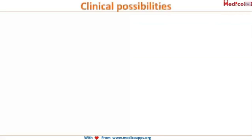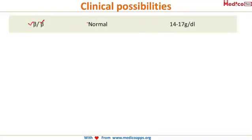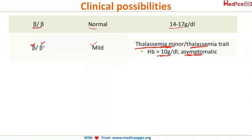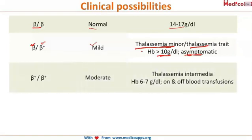Now let us discuss the clinical possibilities when there is abnormal beta chain formation. Whenever 2 normal beta chains are present, it results in normal hemoglobin with a concentration of 14 to 17 gram per deciliter. Whenever one normal beta chain and one partial beta chain are present, it results in a mild condition called thalassemia minor, also known as thalassemia trait. When 2 beta chains with partial synthesis are present, it results in a moderate condition called thalassemia intermedia, with hemoglobin of 6 to 7 gram per deciliter.